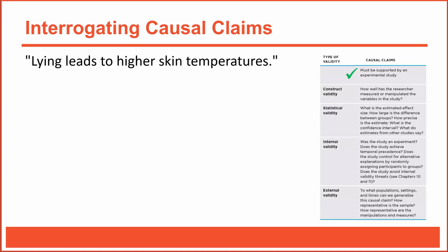True experiments typically use special terminology. In this case, whether or not subjects lied was the independent variable, and skin temperature was the dependent variable. During an experiment, researchers manipulate an independent variable to see if that manipulation affects a dependent variable. So right from the start, we know this research study was experimental. And, based on the analysis we just completed, we know that this experiment had excellent internal validity.